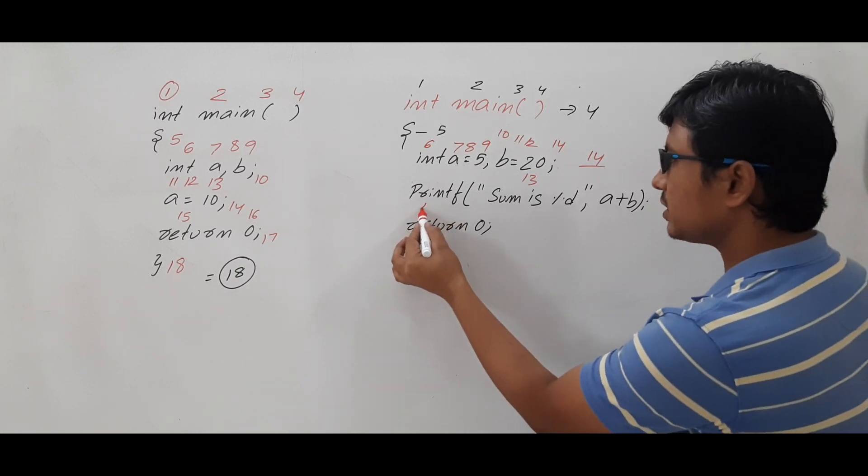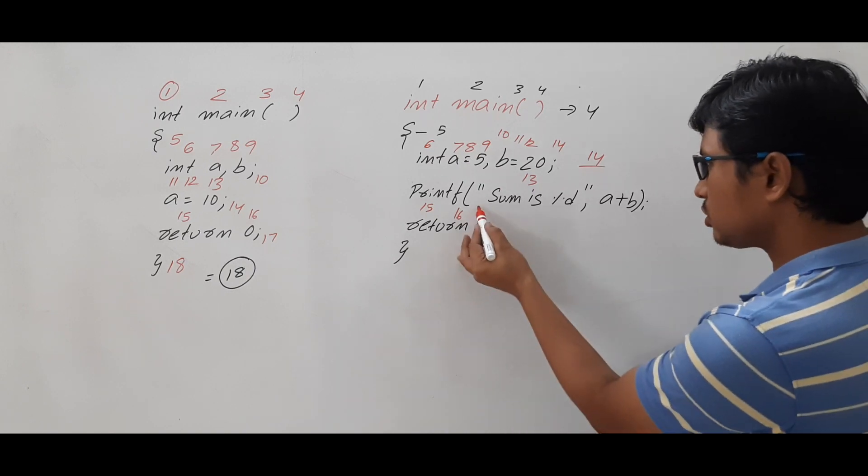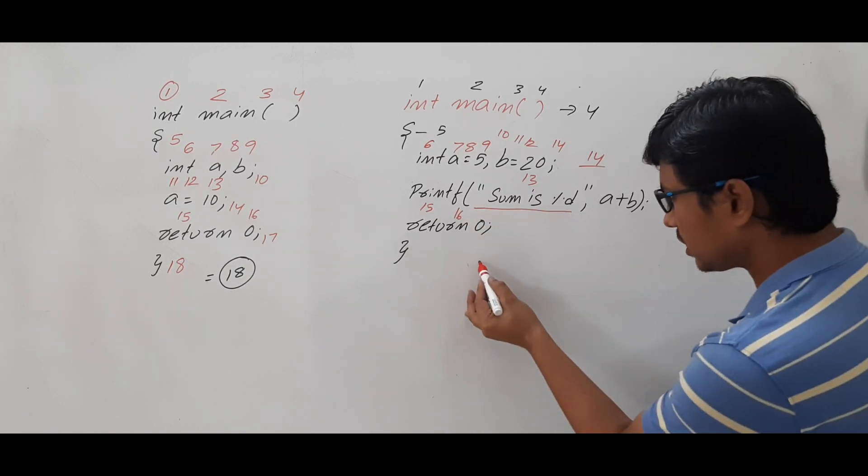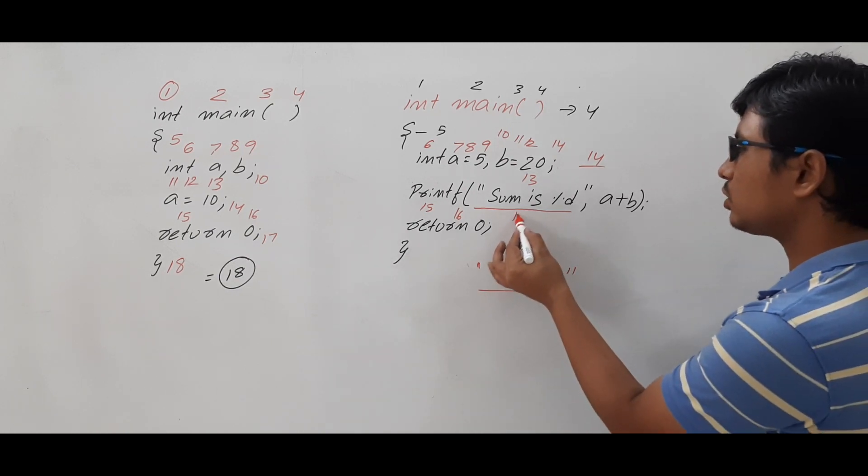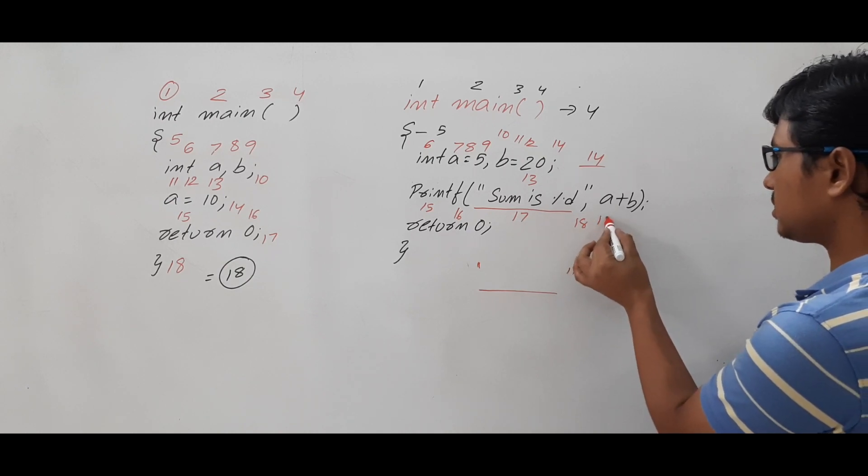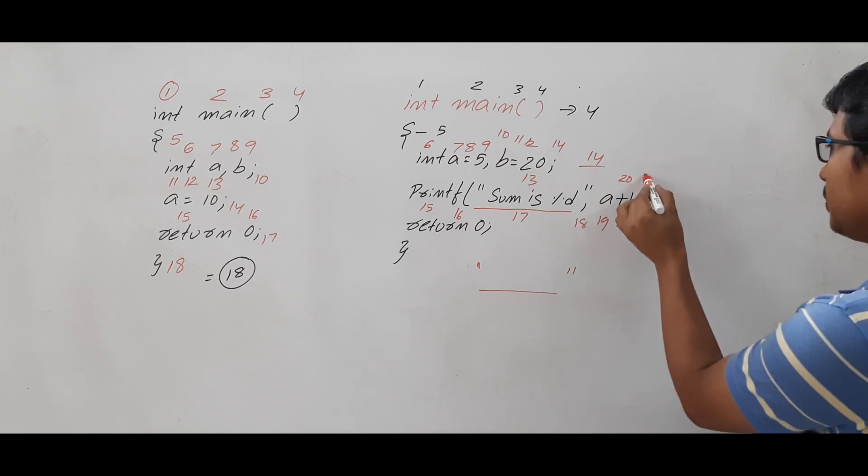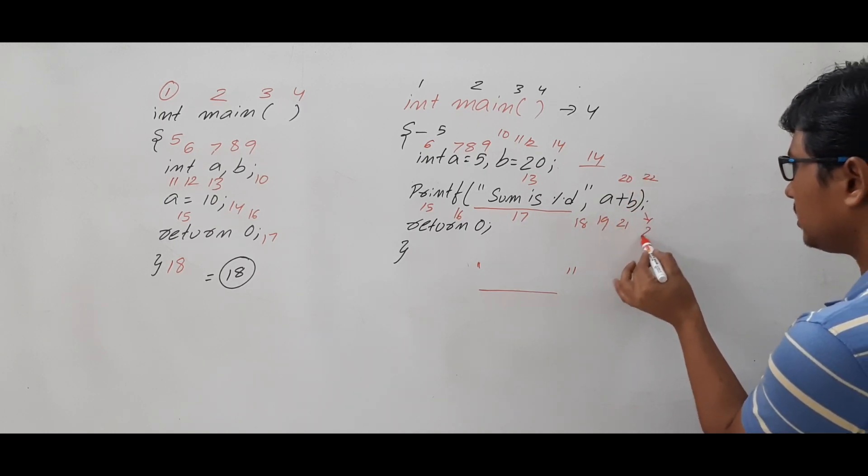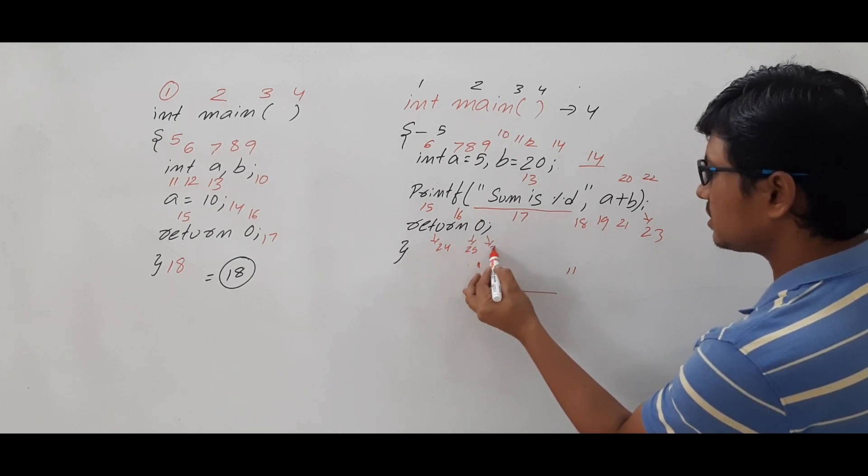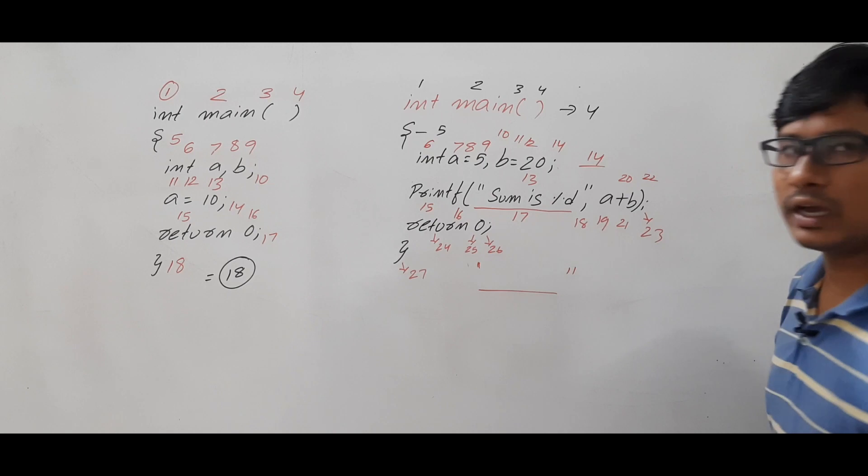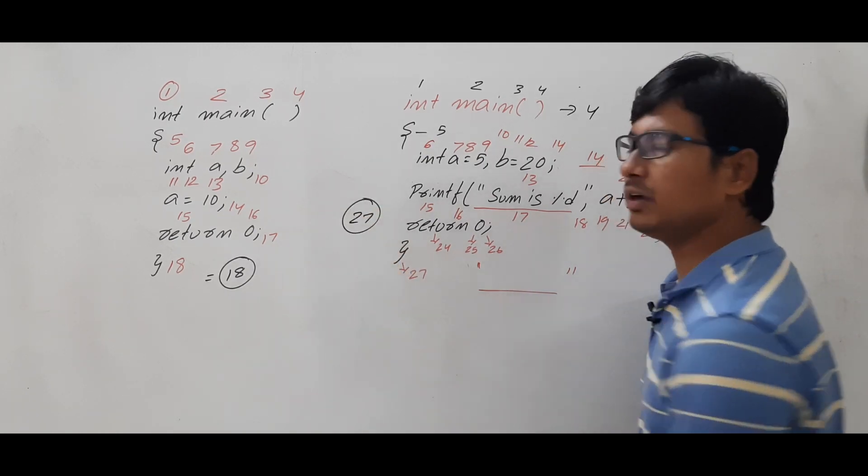Now printf is another token, and this total one within double quotation, whatever is there - open braces and double braces, whatever is there - is one token. And this is 16, this is 17, this is 18, this is 19, this is 20, this is 21, 22, 23, 24, 25, 26, 27. So totally I got 27 tokens from this high level language code.